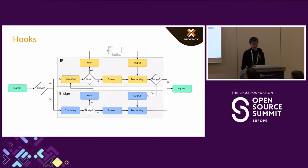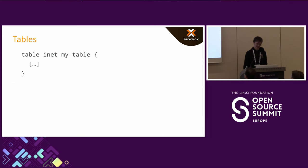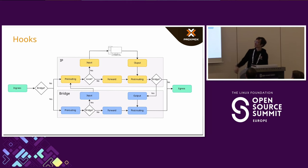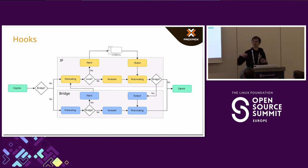To show you how NF Tables combines those, here is a graph with lots of arrows and hooks. The main takeaway is you can see there are two different types of tables — one for IP traffic and one for bridge traffic — and it provides separate hooks for each.